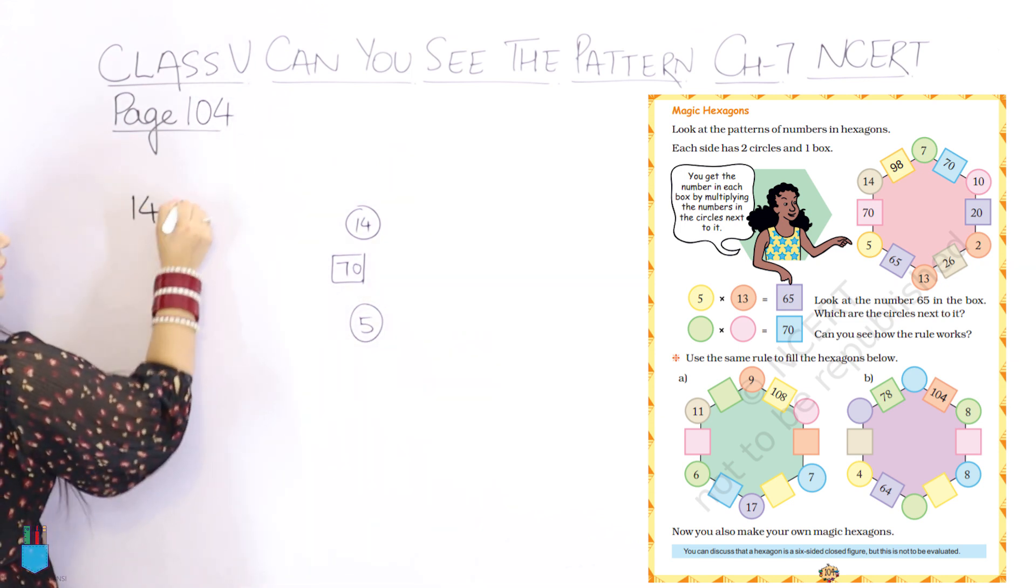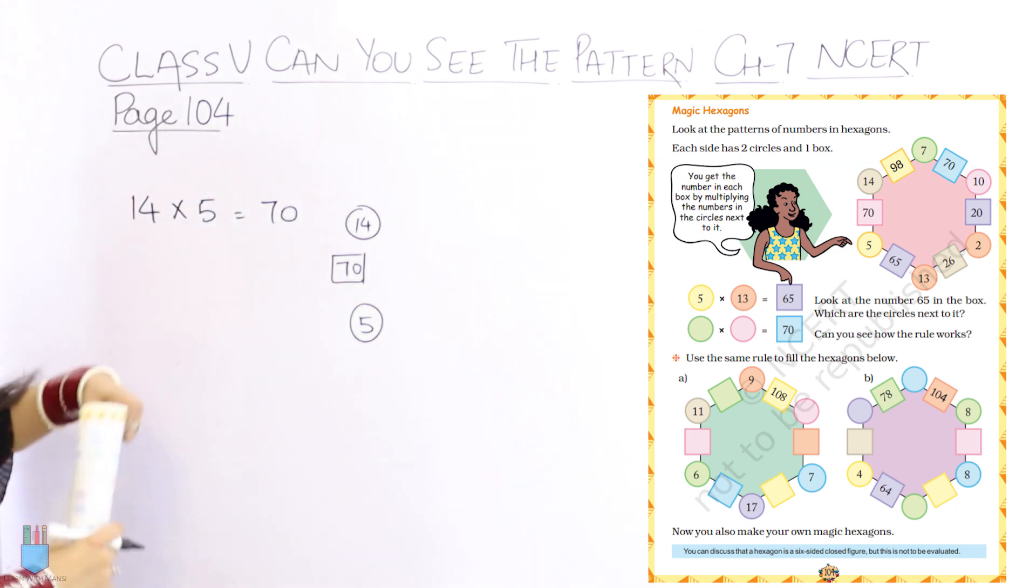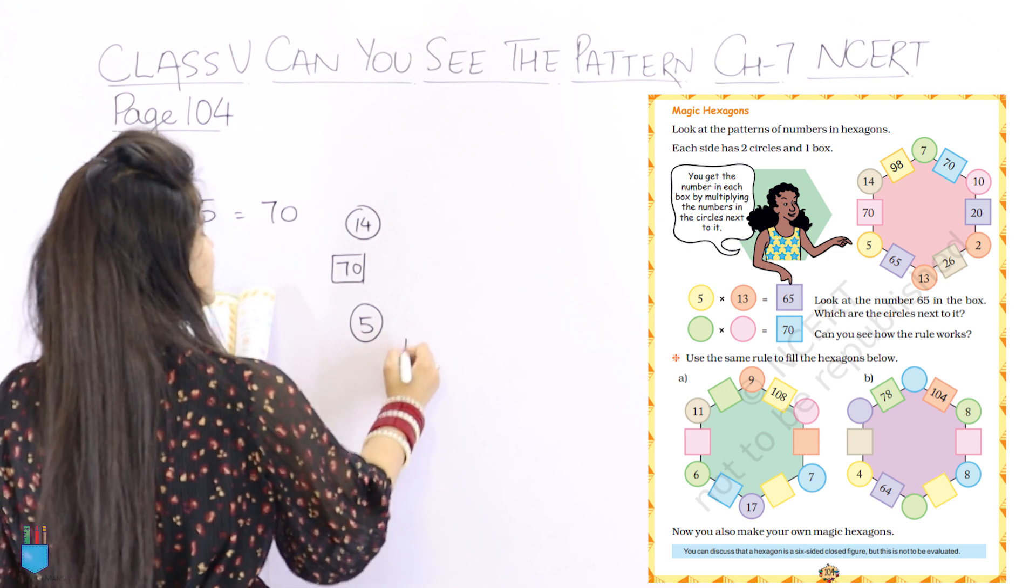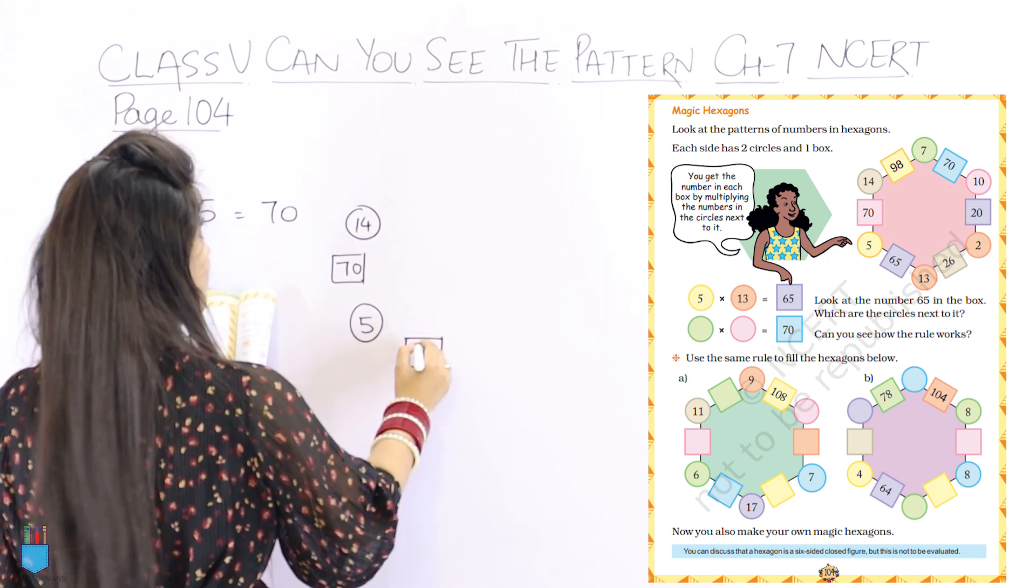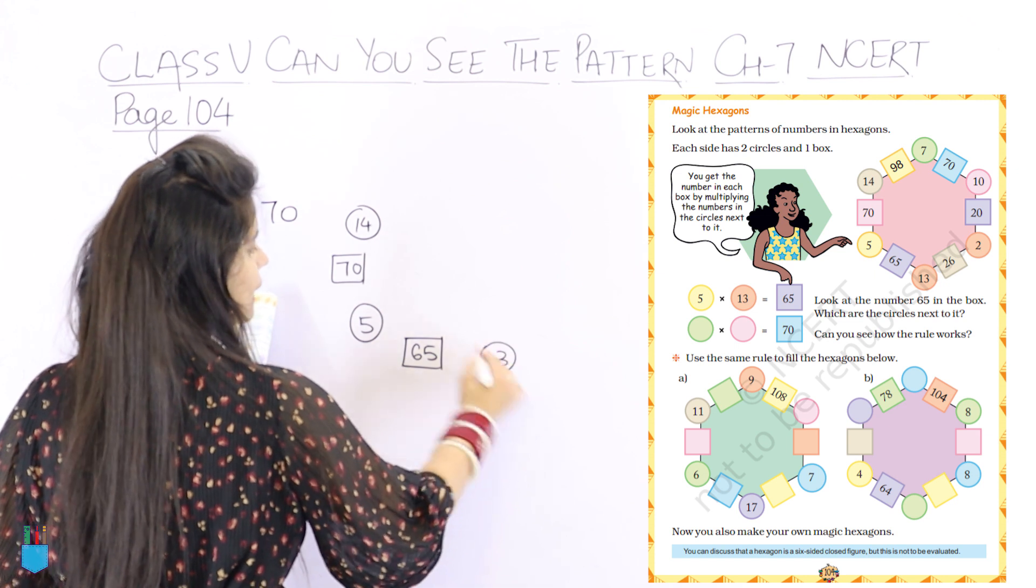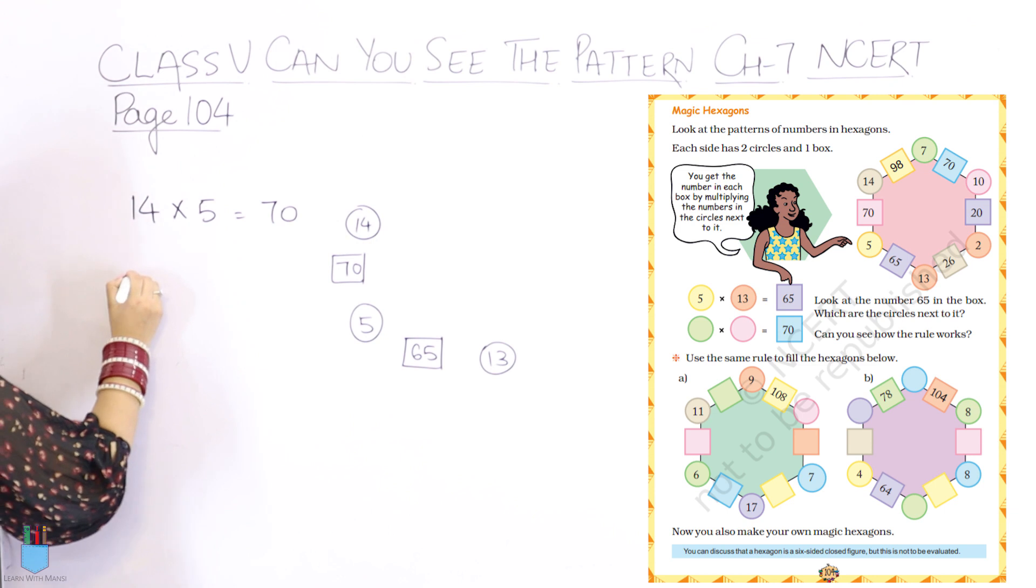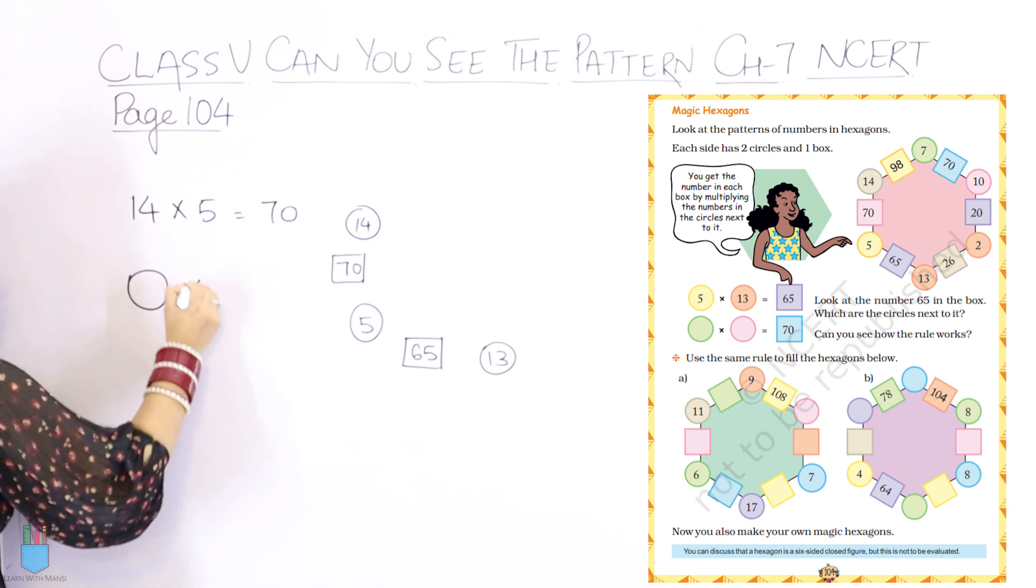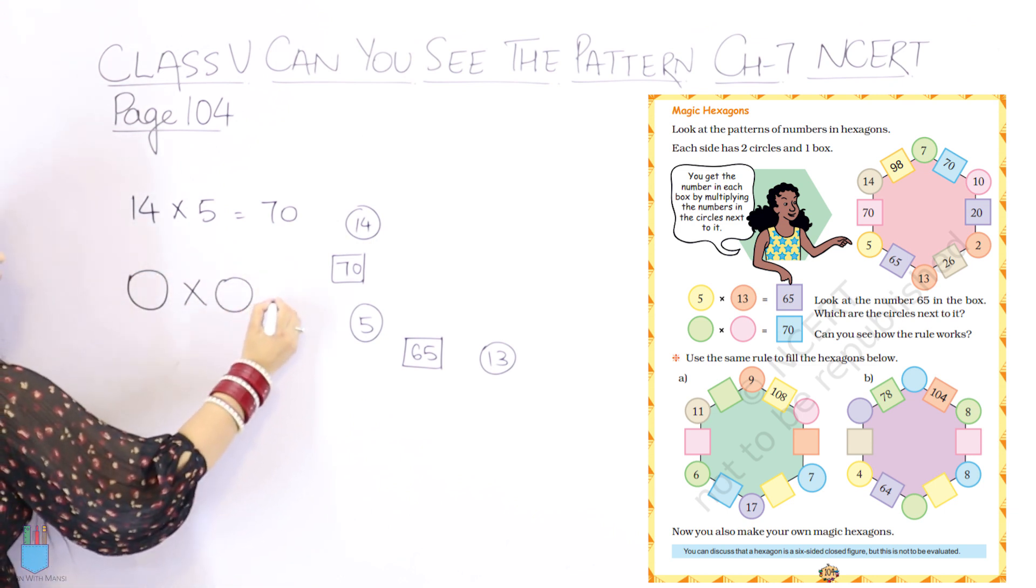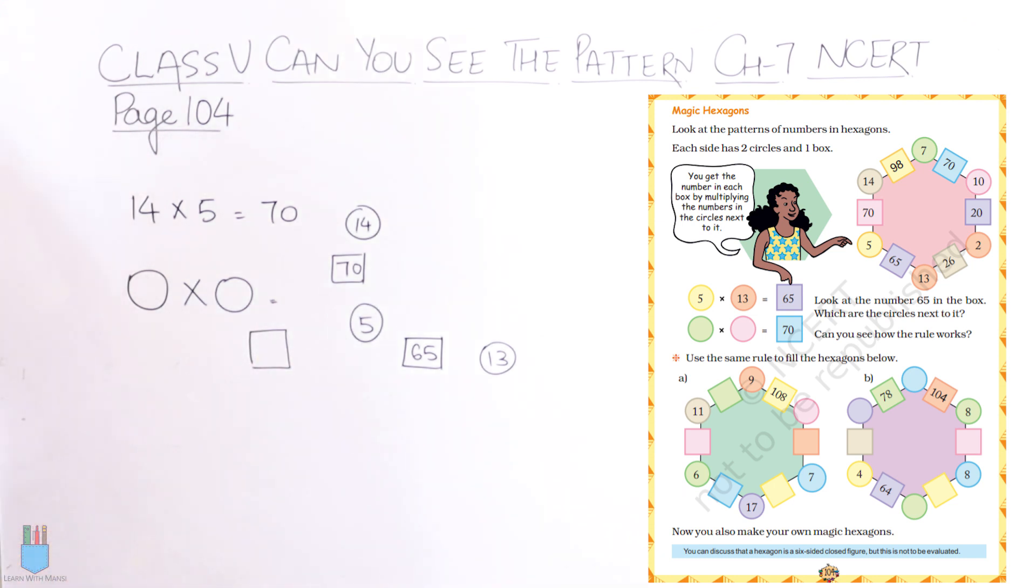Because it is 14 into 5 is 70. Okay, let's look at one more. The square is 65 and the circle is 13. So 13 into 5 is 65. That means the number of circle is multiplied by the circle and the square is written in the square.